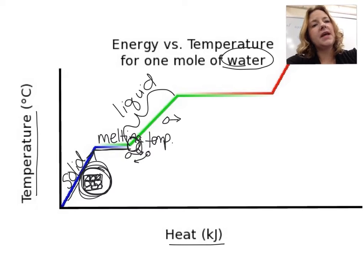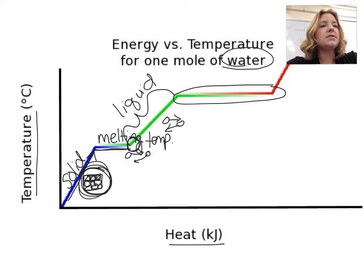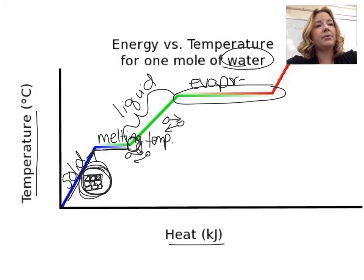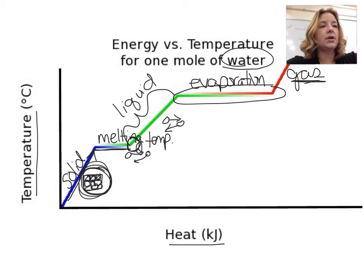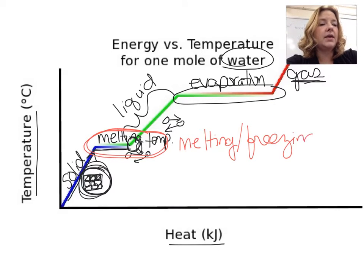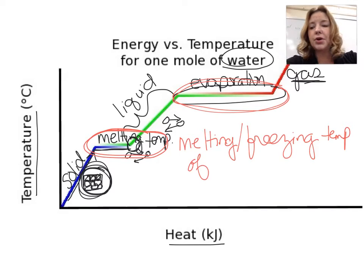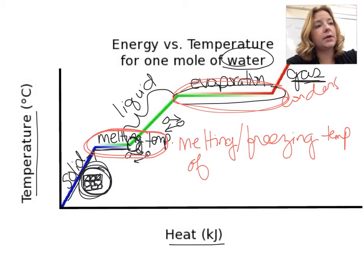Our molecules now can flow past one another. Then the temperature starts to even out again, so we have another phase change going on. The molecules are going from a liquid to a gas — that's going to be the point where it is evaporating, so this is evaporation. Once all of the molecules are in the gas form, the temperature can start to increase again. That evening out of temperature tells us the melting or freezing temperature if we were going the opposite way, and the other even point tells us the evaporation temperature, or if going the other direction, the condensation temperature.